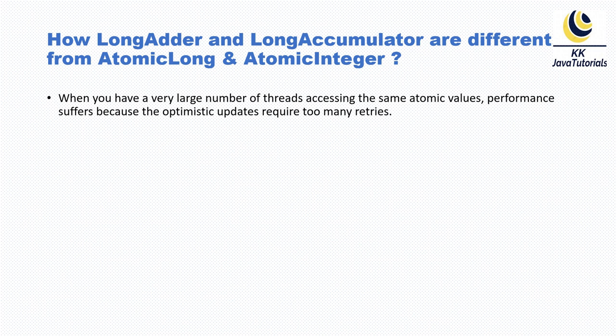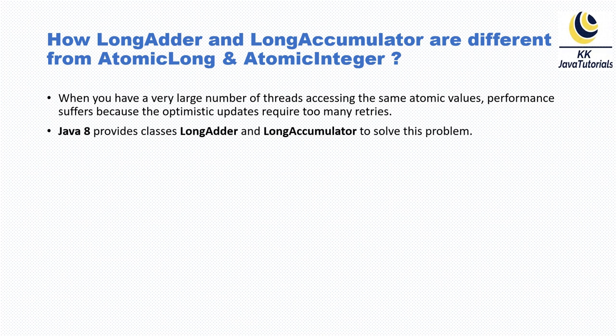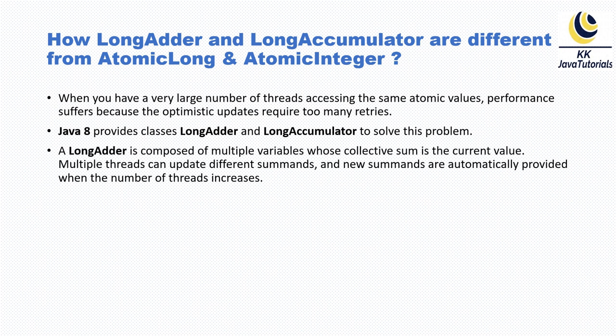These are two ways to achieve thread safety, but another way is to apply an optimistic update — where you don't need a synchronized keyword or Lock interface. In that case, the JVM will try many times to update the value; that is called an optimistic lock, and that is the approach LongAdder and LongAccumulator use to update any long value.